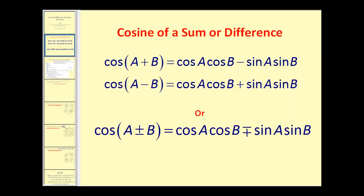If we have the cosine of a sum or difference, here are the identities. The cosine of the quantity a plus b is equal to cosine a times cosine b minus sine a times sine b. And if we have a difference, it's equal to cosine a cosine b plus sine a sine b.